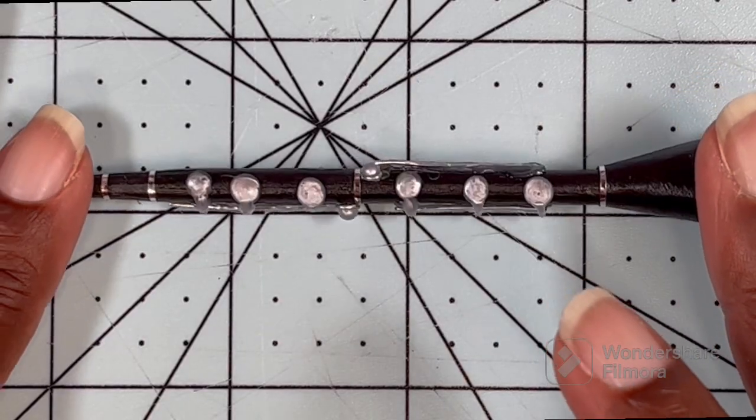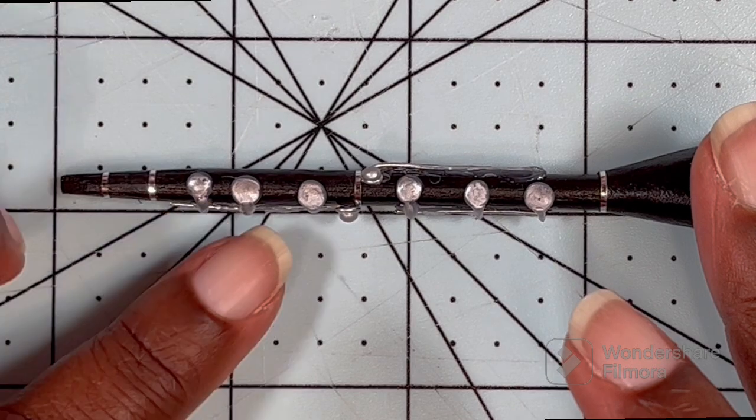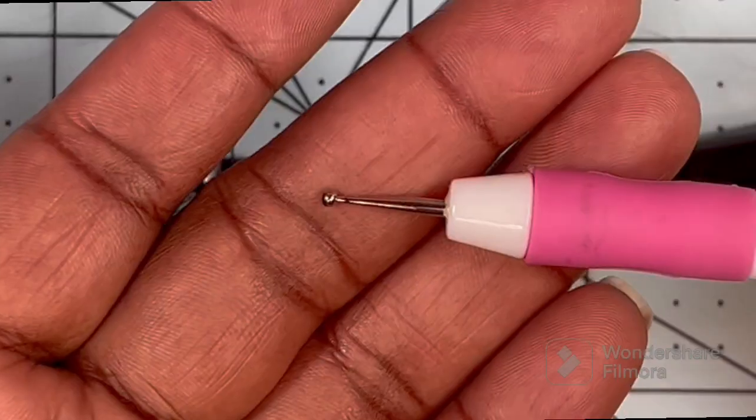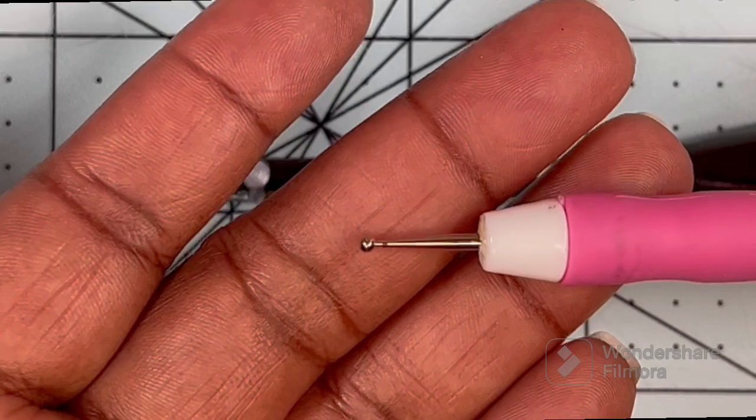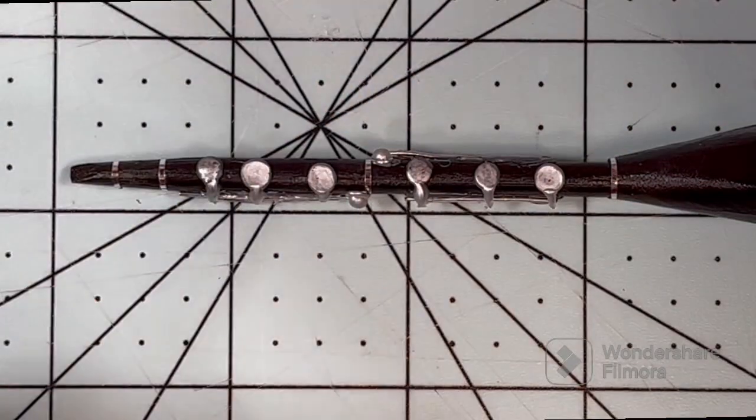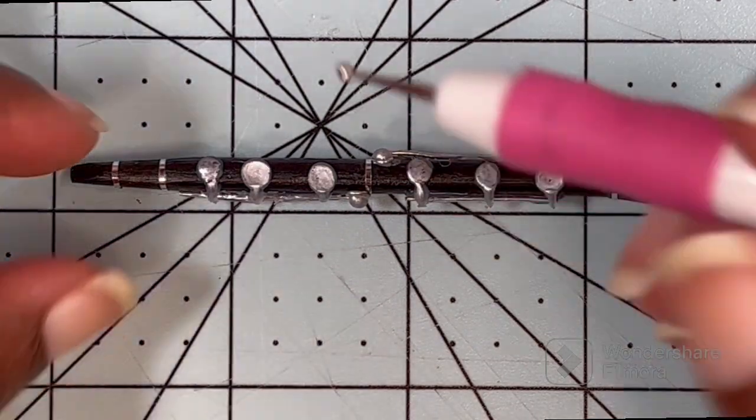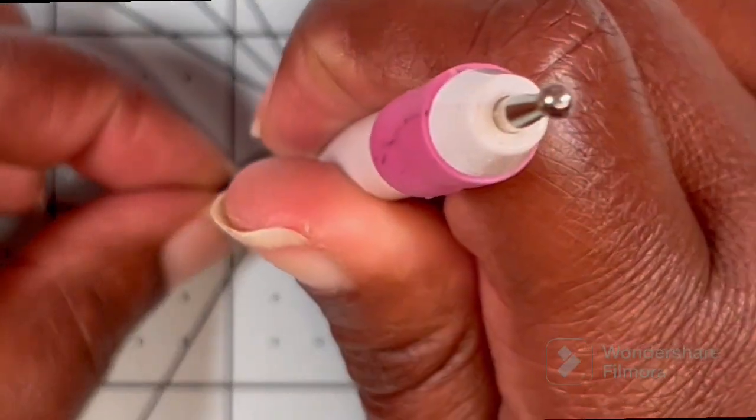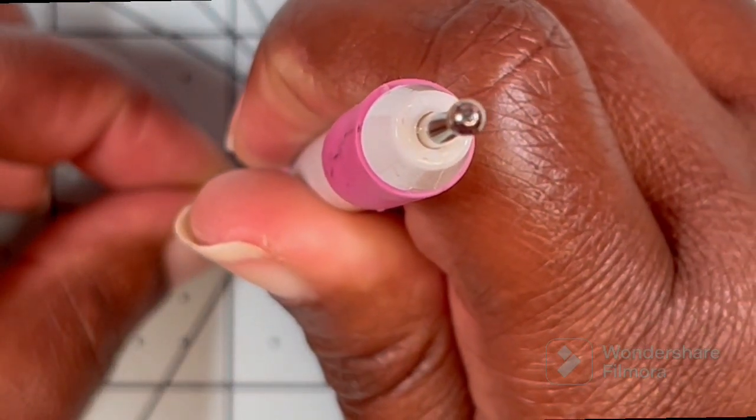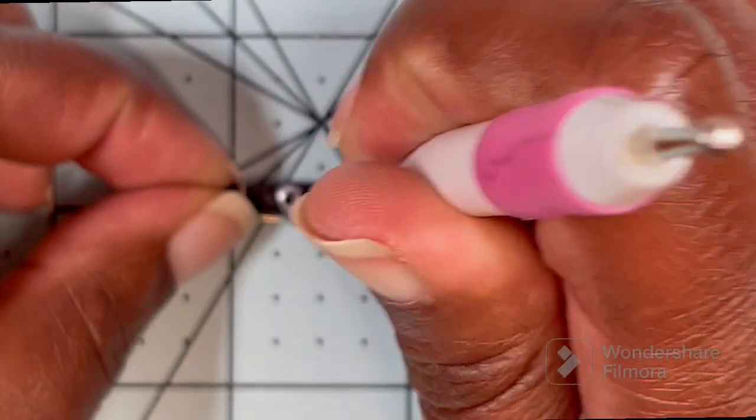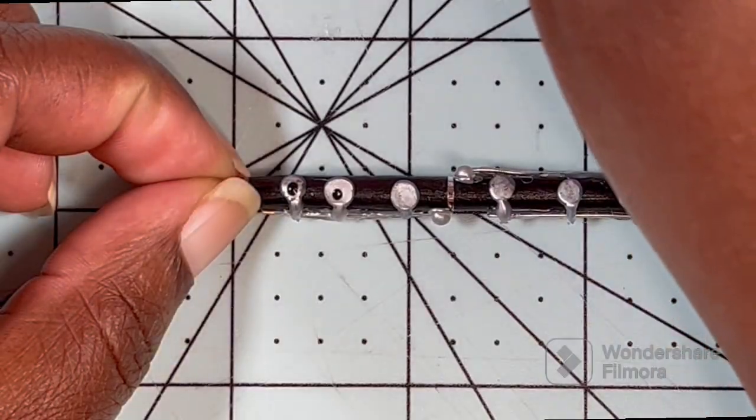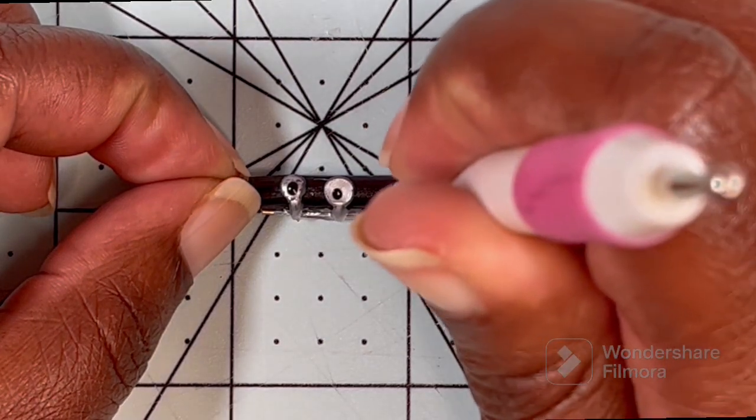Now we need to just add our open holes onto these main keys so I'm going to take this little tool from the Dollar Tree, I'm using the smaller end, I'm going to dip that into some black paint and each one of these main keys are just going to get a dot of black paint in the center because the clarinet does have open holes on the main keys.